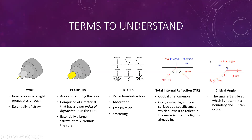We also have total internal reflection, which we touched on earlier. It's an optical phenomenon that occurs when light hits a surface at a specific angle, causing it to reflect back within the material it is already in. Normally with refraction the light would exit into the other medium at a different angle, but here it bounces back. Finally, the critical angle is the smallest angle at which total internal reflection can occur — at this angle the light travels right at the border between the two media.